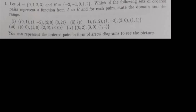The first question that I have is, let A be equal to {0, 1, 2, 3}, and B be equal to {-2, -1, 0, 1, 2}. Which of the following sets of ordered pairs represent a function from A to B, and for each pair, state the domain and the range? Then, after that, they are saying that you can represent the ordered pair in the form of arrow diagrams to see the picture.